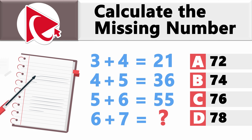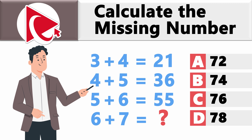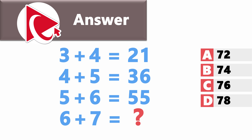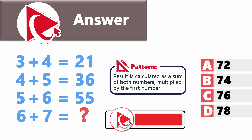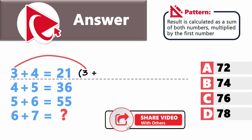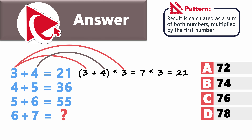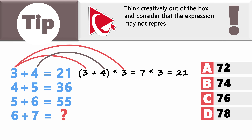Make sure to examine the original expressions closely. The pattern here is that the result is calculated as the sum of both numbers multiplied by the first number. For example, in row 1: 3 plus 4 equals 7, and then 7 multiplied by 3 equals 21. The tip for these types of challenges is to think creatively out of the box and consider that the expression may not represent standard math calculations.